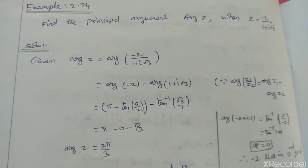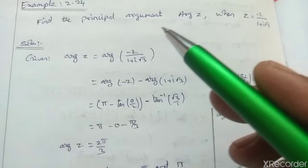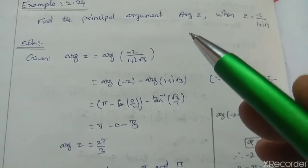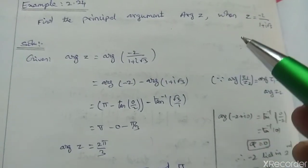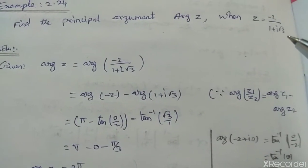Chapter 2, Example 2.24. Find the principal argument arg of z when z equals minus 2 divided by 1 plus i root 3.